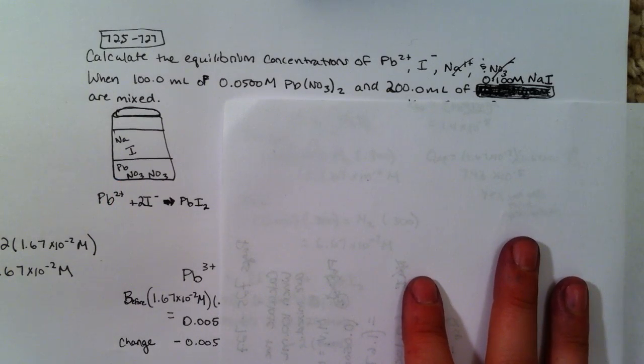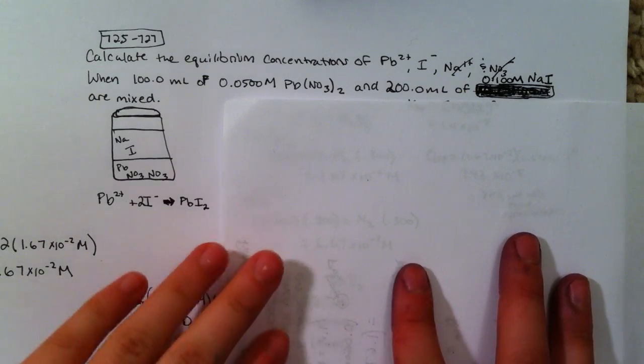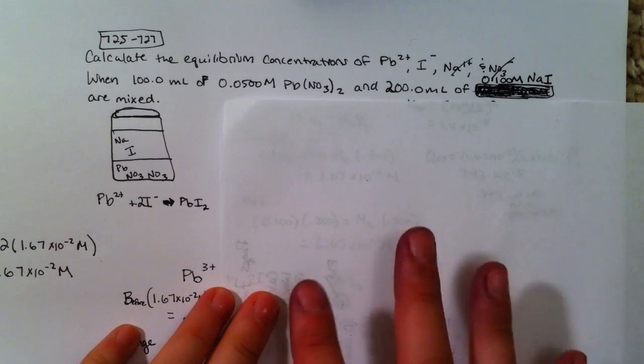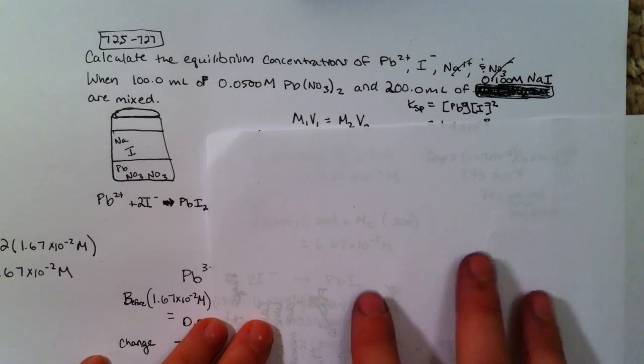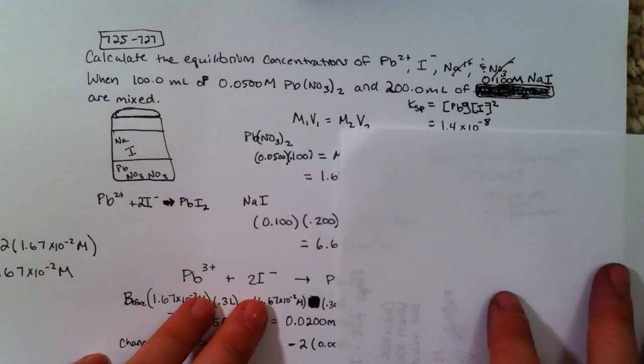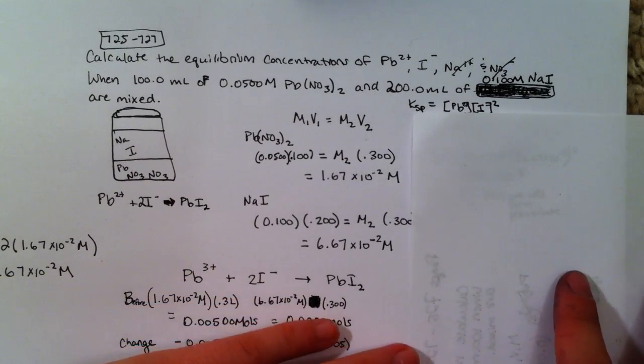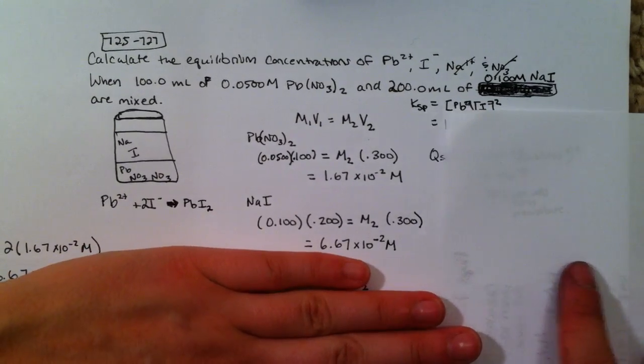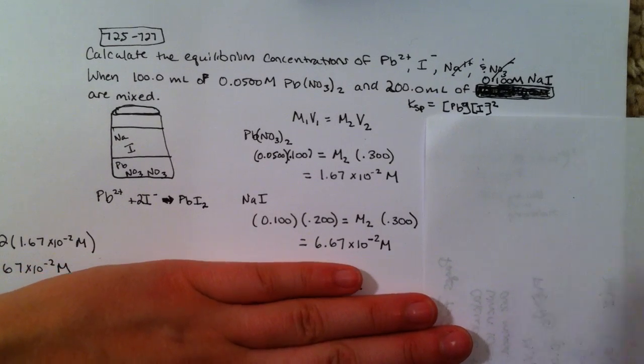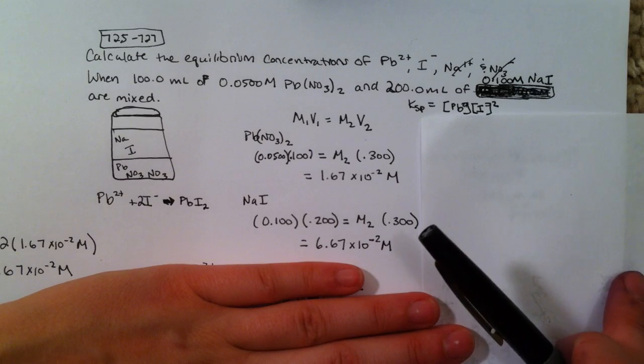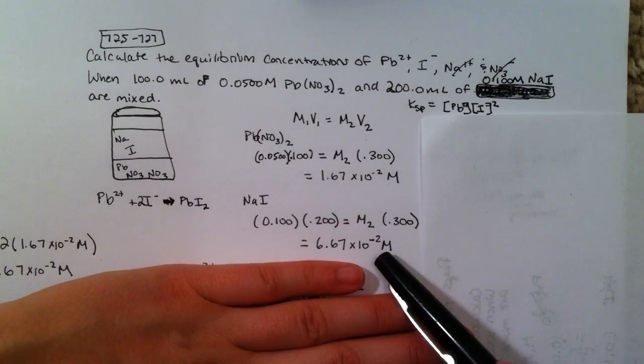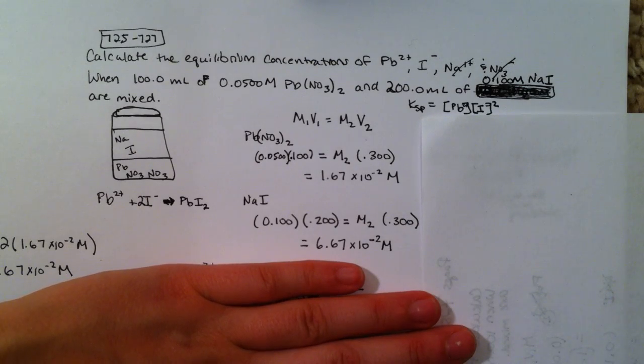To get started, let's find these new concentrations. Hopefully you know by now that to find a new concentration, we're going to use M1V1 equals M2V2. So when we do that, I did it for both of them here for you. No peeking. We find that the new lead nitrate is that molarity and the new sodium iodine has that molarity.